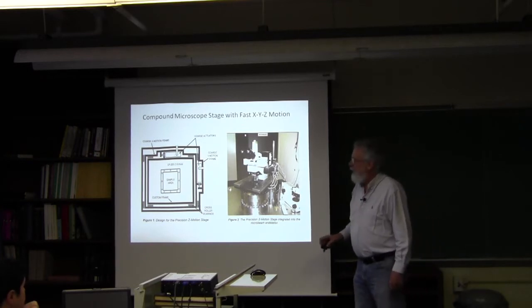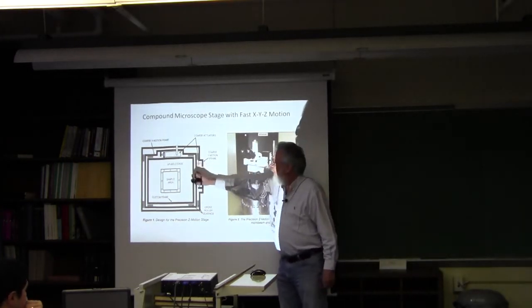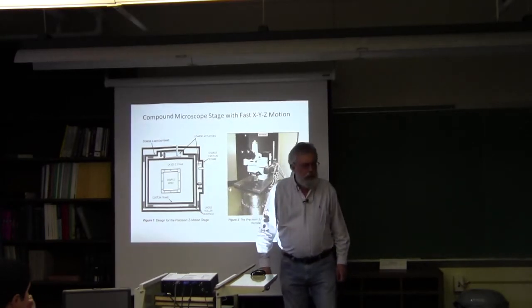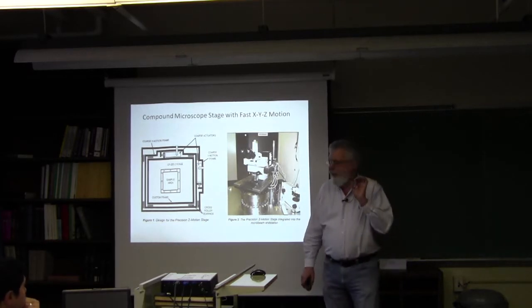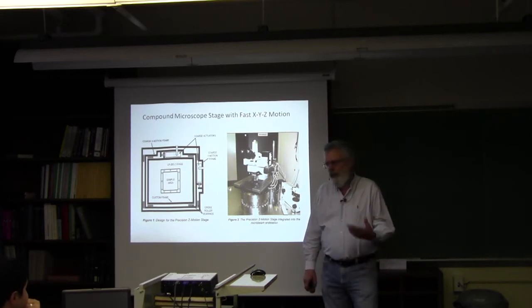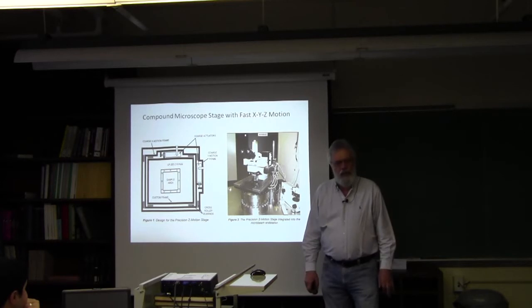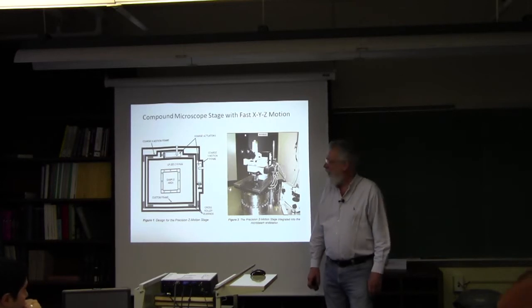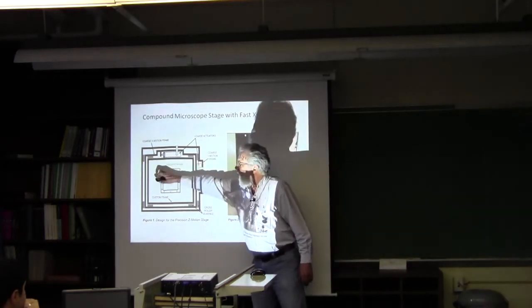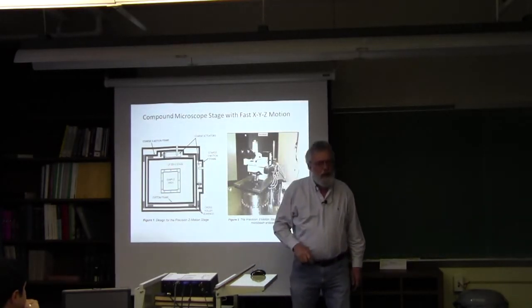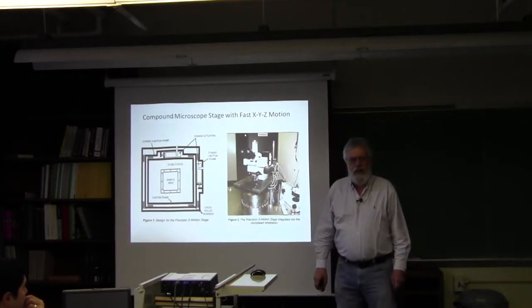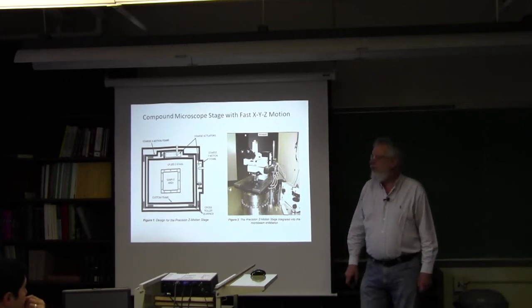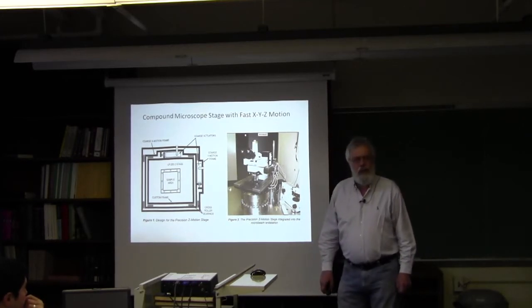The microscope stage actually has two parts. There's an outside frame which is moved by stepping motors. It can move plus or minus five millimeters, which covers the size of our sample dish. It goes about two millimeters a second but has only about six micron resolution, which isn't adequate for aiming at things with micron precision. So inside that there's another stage which is a piezoelectric drive stage which has plus or minus a hundred micron movement in the X, Y, and Z directions.